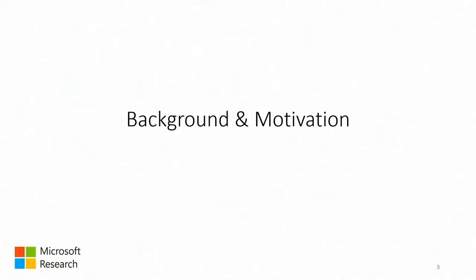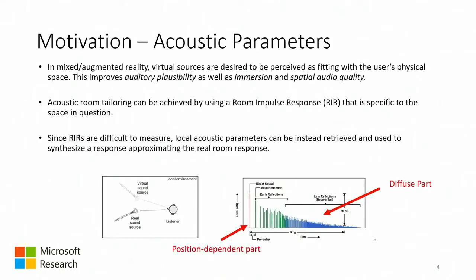Let's start from the background. So, acoustic parameters — why do we care about them? In mixed and augmented reality, virtual sources are desired to be perceived as fitting with the rest of the user's physical space. We want in mixed reality for real sources and virtual sources to blend together in the same perceptual space, improving auditory plausibility, spatial audio immersion, and spatial audio quality.